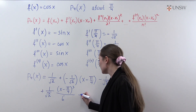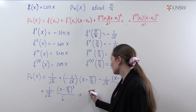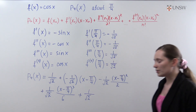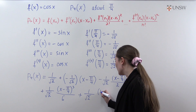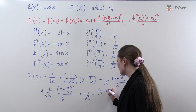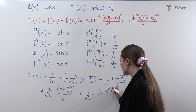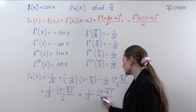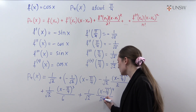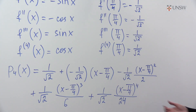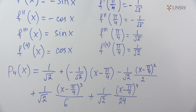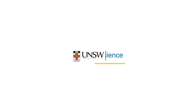And finally, the fourth derivative term: 1 over square root of 2 times (x minus pi over 4) to the power 4 over 4 factorial, which is 24. So we obtain the Taylor polynomial of degree 4 for the function cos x.